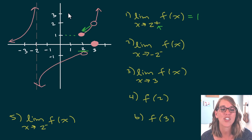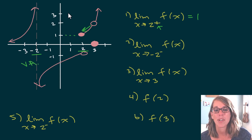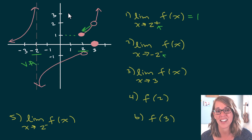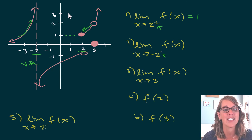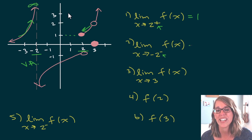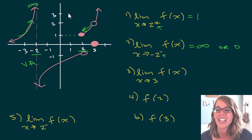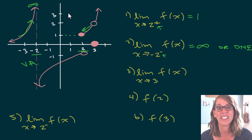The second one: I'm approaching negative 2, which is a vertical asymptote at x equals negative 2, but from the left-hand side. Approaching negative 2 from the left sends me up in the y direction to infinity. You can answer this in two ways: positive infinity to describe the behavior, or does not exist. Does not exist is correct, but infinity is a better answer because we're really looking for behavior when evaluating limits.